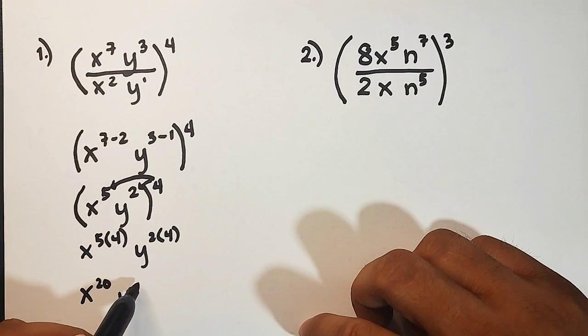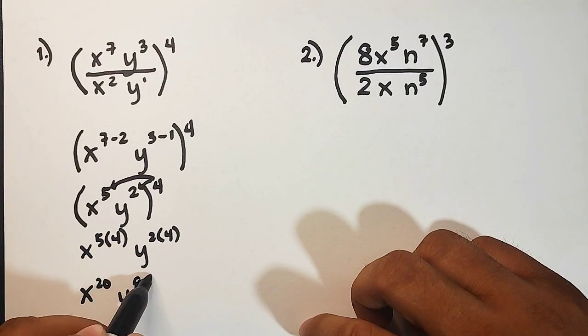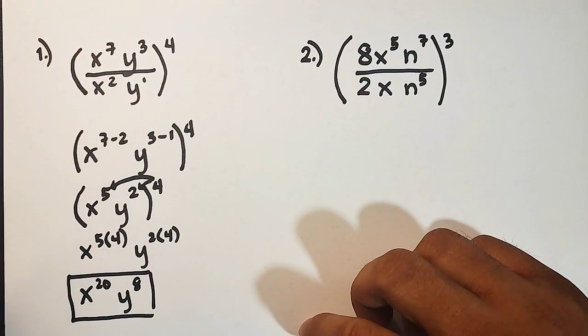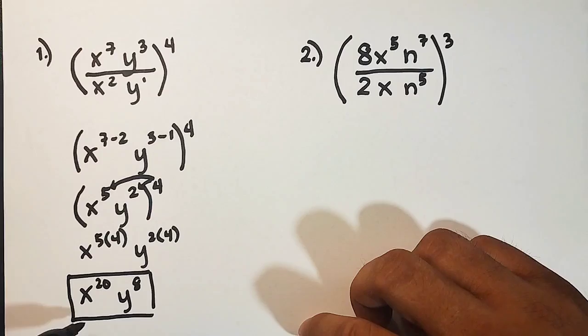Then your y, which is 2 times 4, which is equal to 8. And this is now the simplified form of this given expression. We have x raised to 20, y raised to 8.